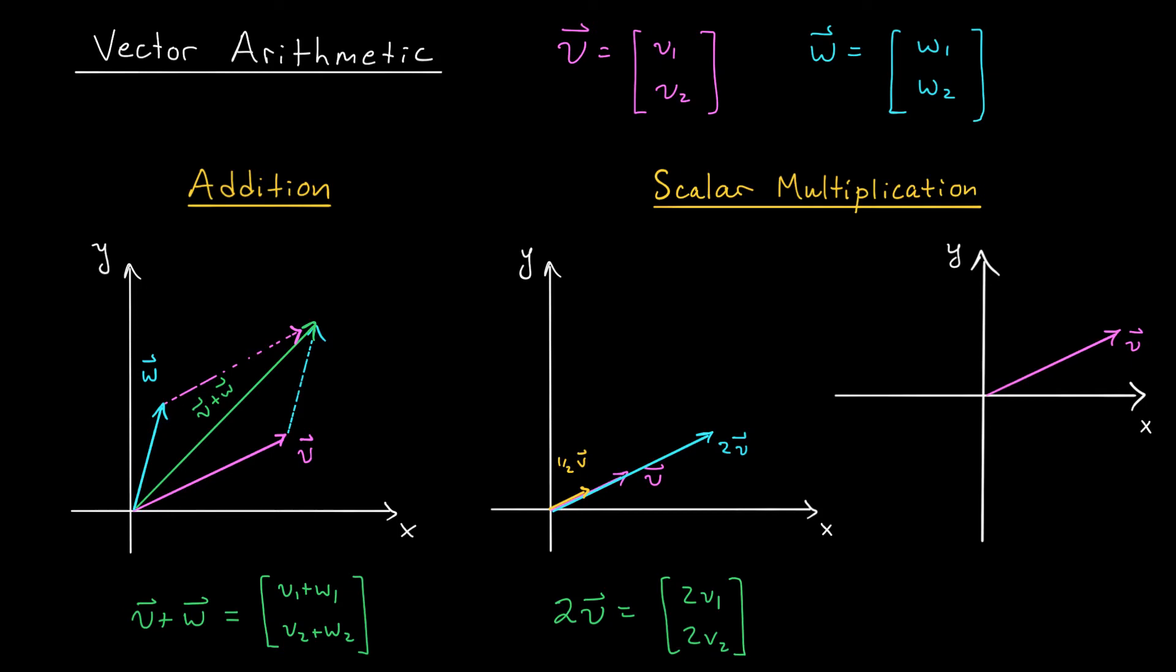Now, one important thing to point out is that if you multiply a vector by a negative number, it's going to switch direction. So if V is the vector you see here, then minus V is going to be pointing in the opposite direction.